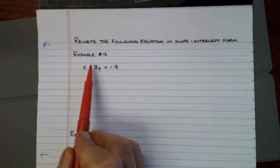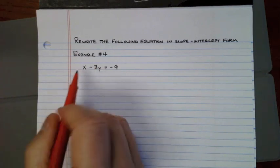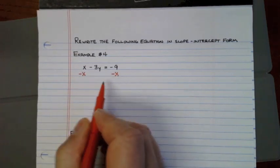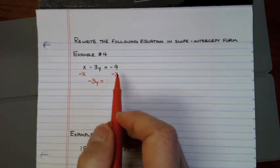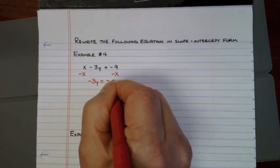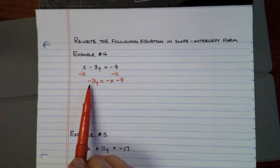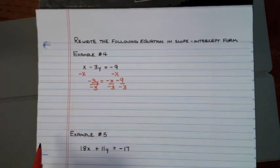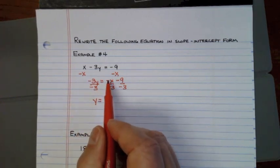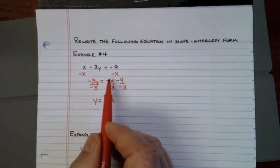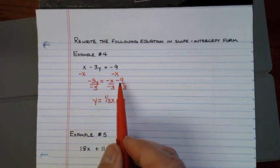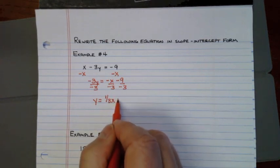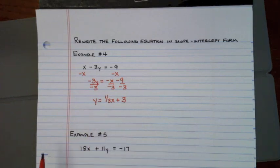Example number four: I need to get Y by itself, so I subtract X from both sides to get negative 3Y = negative X minus 9. These are not like terms, so I can't combine them. The opposite of multiplying by negative 3 is dividing by negative 3. Dividing everything by negative 3, the negative 3s cancel out, and — remember a negative divided by a negative is a positive — I get Y = 1/3 X + 3. This is in slope-intercept form.